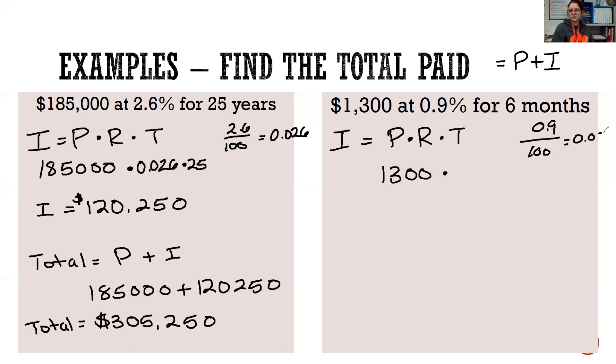We'll have 0.009. And then for six months. Well, that's a month, not in years. So we need to divide it by 12. And I know six divided by 12 is 0.5. So because this is a simpler decimal, I'm going to go ahead and use it. So 1300 times 0.009 times 0.5 means in half a year, we will have earned $5.85 in interest.